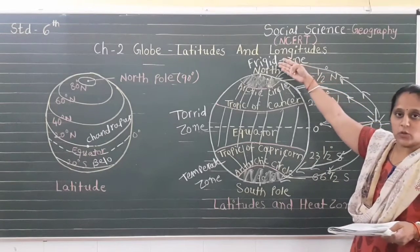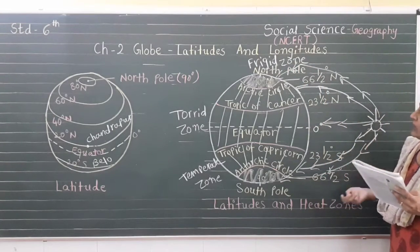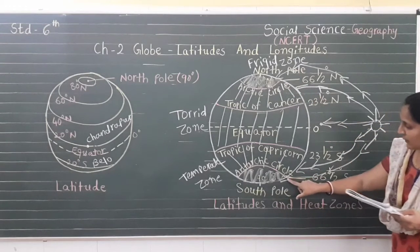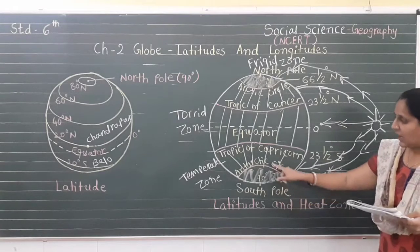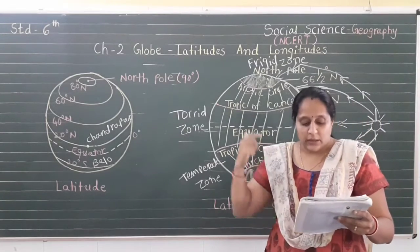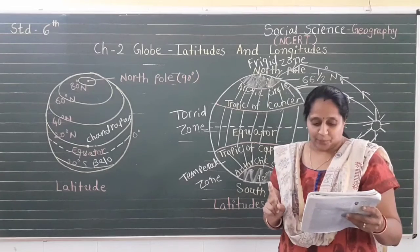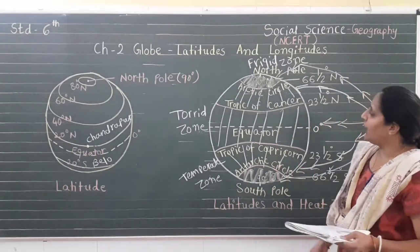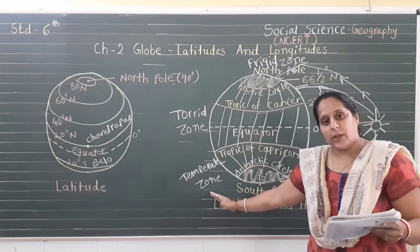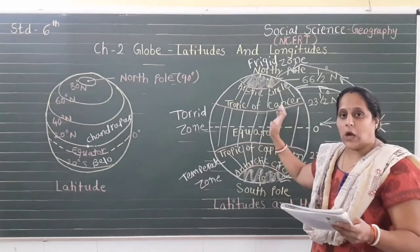The frigid zone covers areas from the Arctic Circle to the North Pole in the northern hemisphere, and from the Antarctic Circle to the South Pole in the southern hemisphere. These areas are very cold because the sun does not rise much above the horizon. Therefore its rays are always at a slanting position and provide very little heat. Around 8 to 9 months in many areas they get snowfall, which is why this area is called the frigid zone.